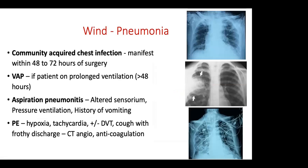Other causes of fever affecting the lungs include pneumonia, which can be community-acquired — where the patient may have contacted bacteria prior to surgery manifesting within 48 to 72 hours — or ventilator-associated pneumonia (VAP) if the patient was on prolonged ventilation for more than 48 hours post-surgery. Aspiration pneumonitis can occur if there was altered sensorium, vomiting, or reduced GCS. If the patient had DVT and presents with hypoxia and tachycardia, it may be pulmonary embolism.